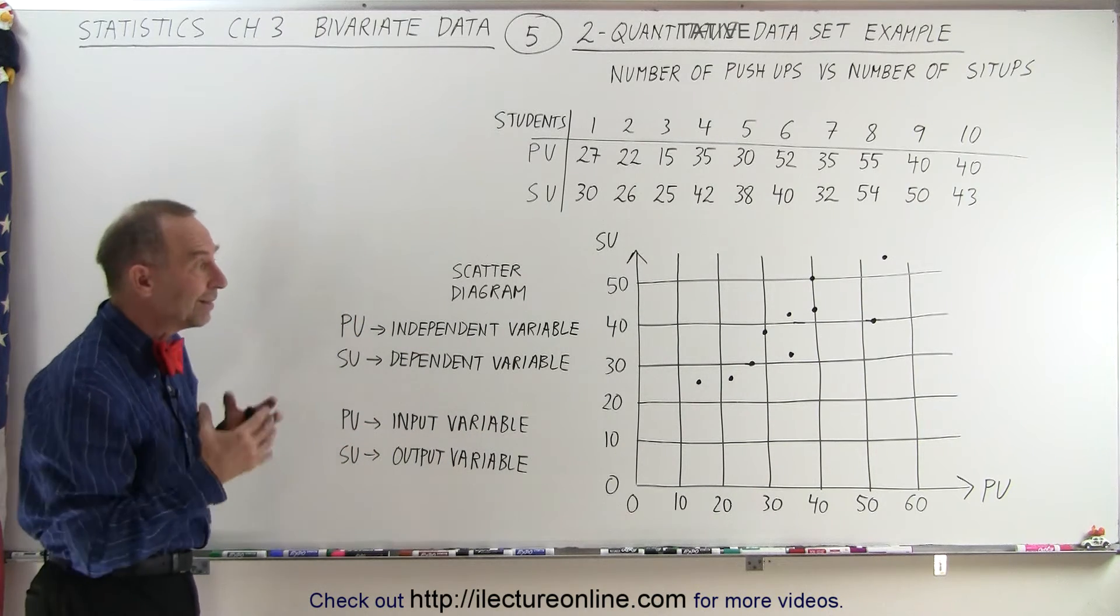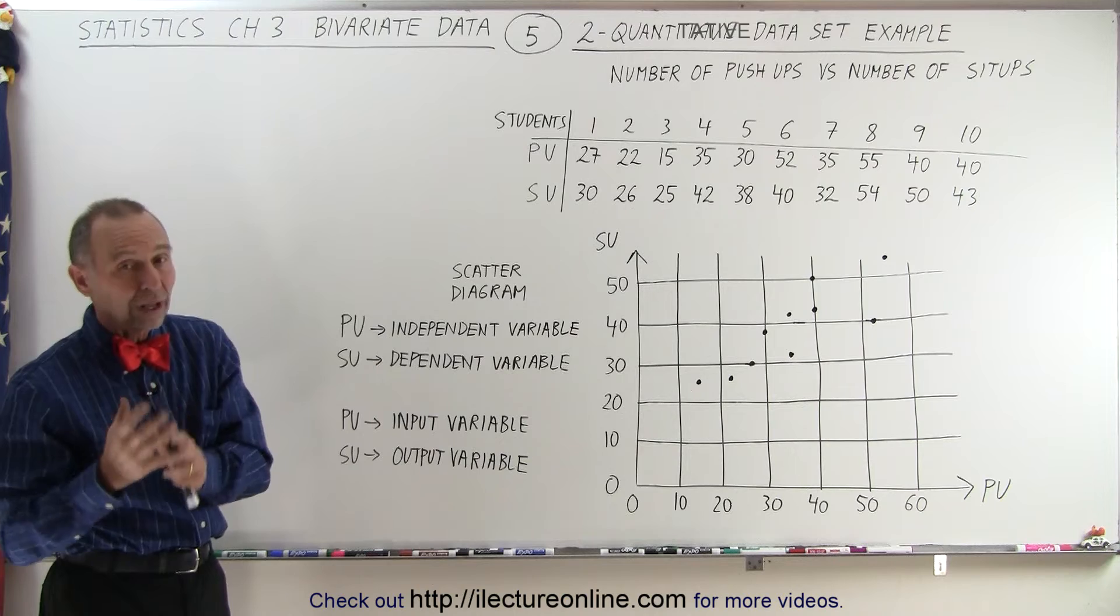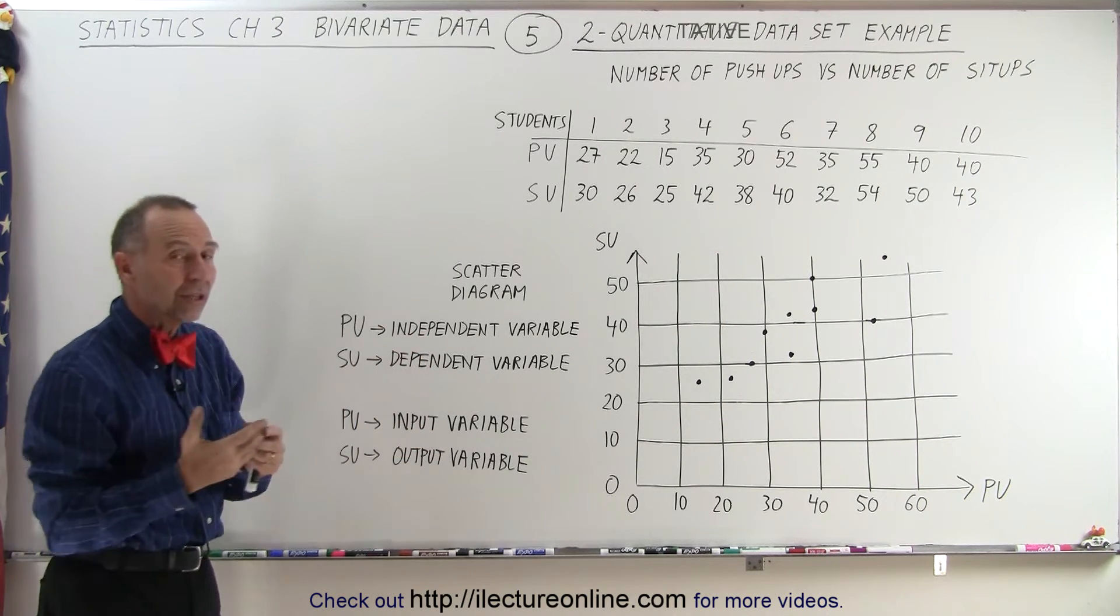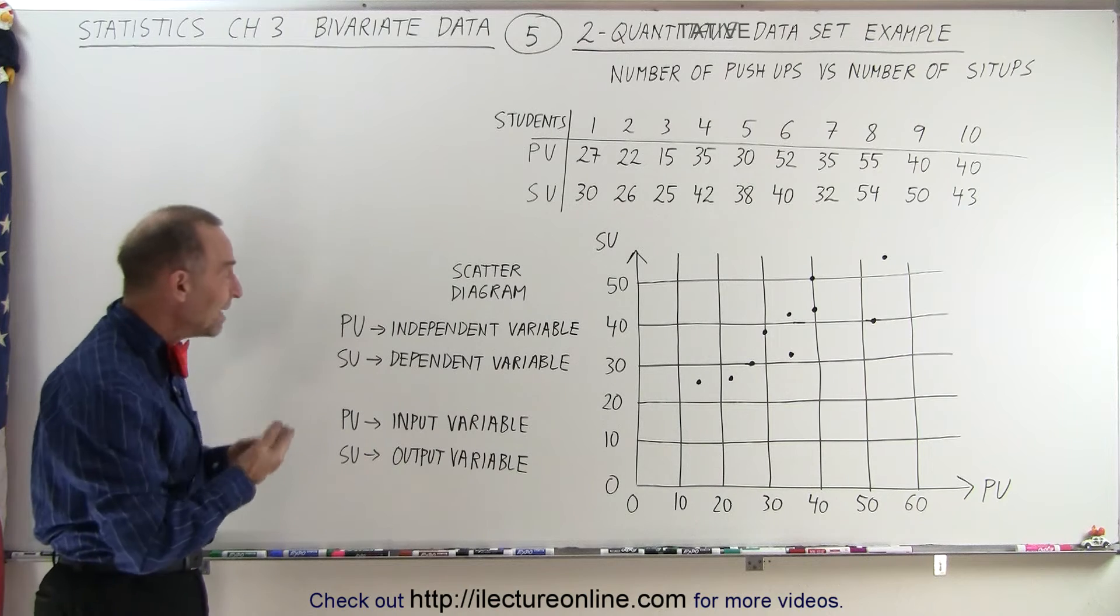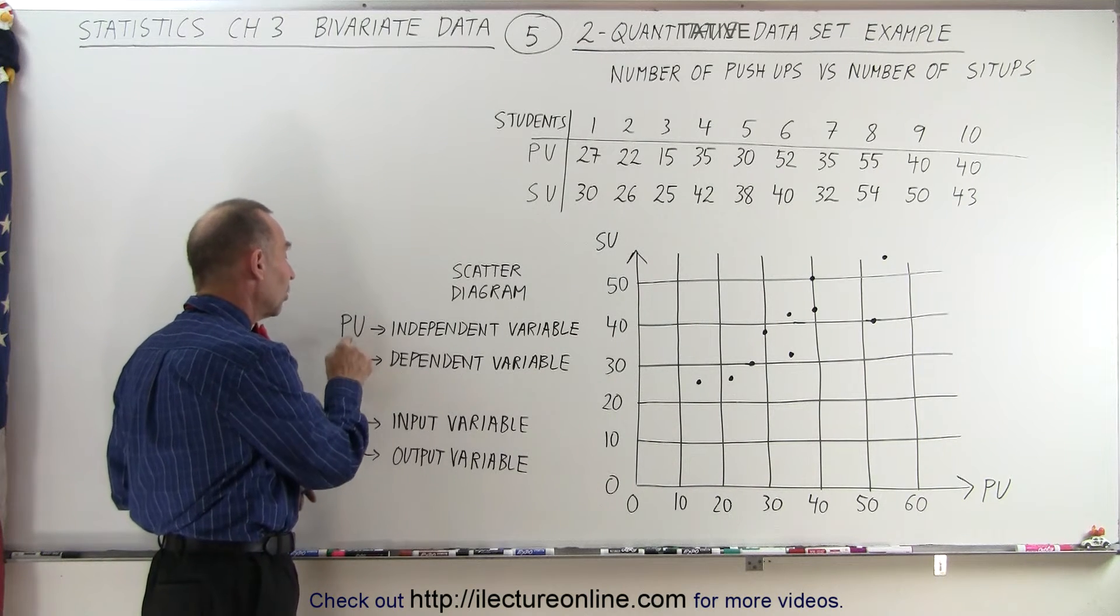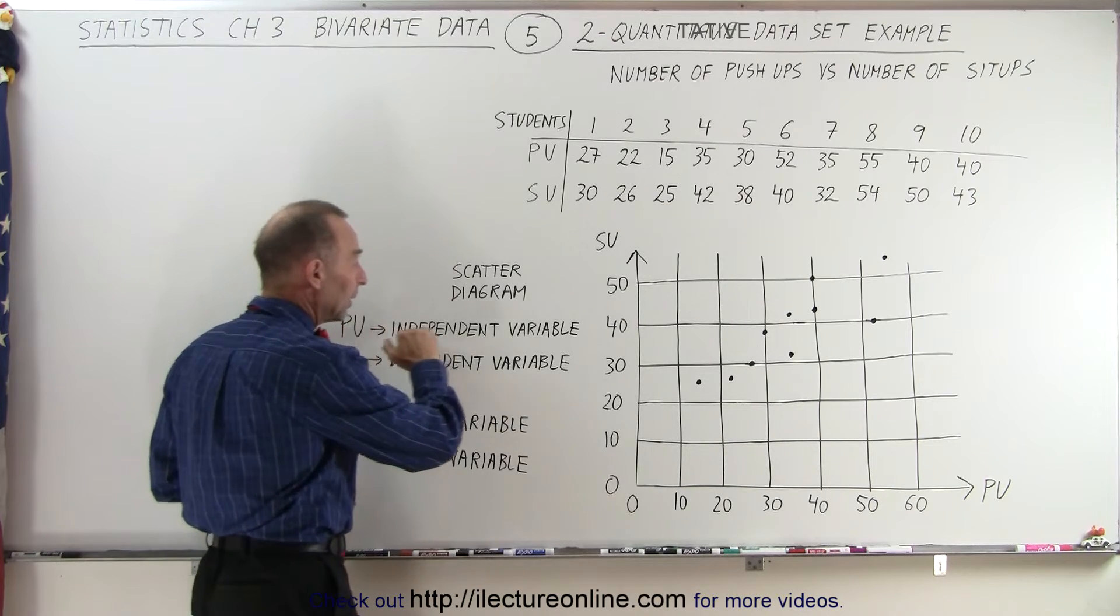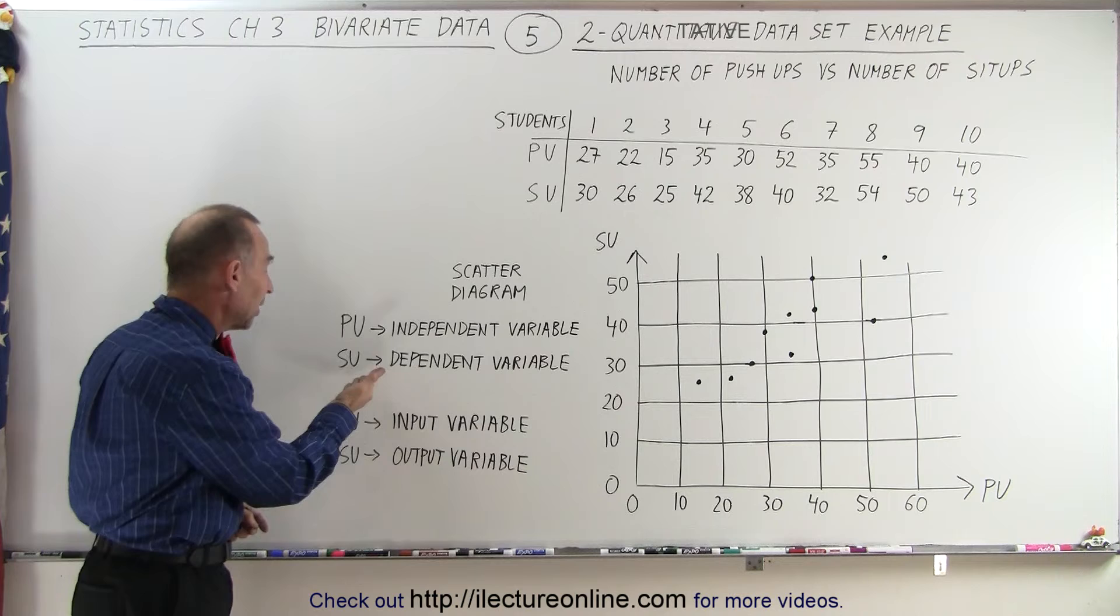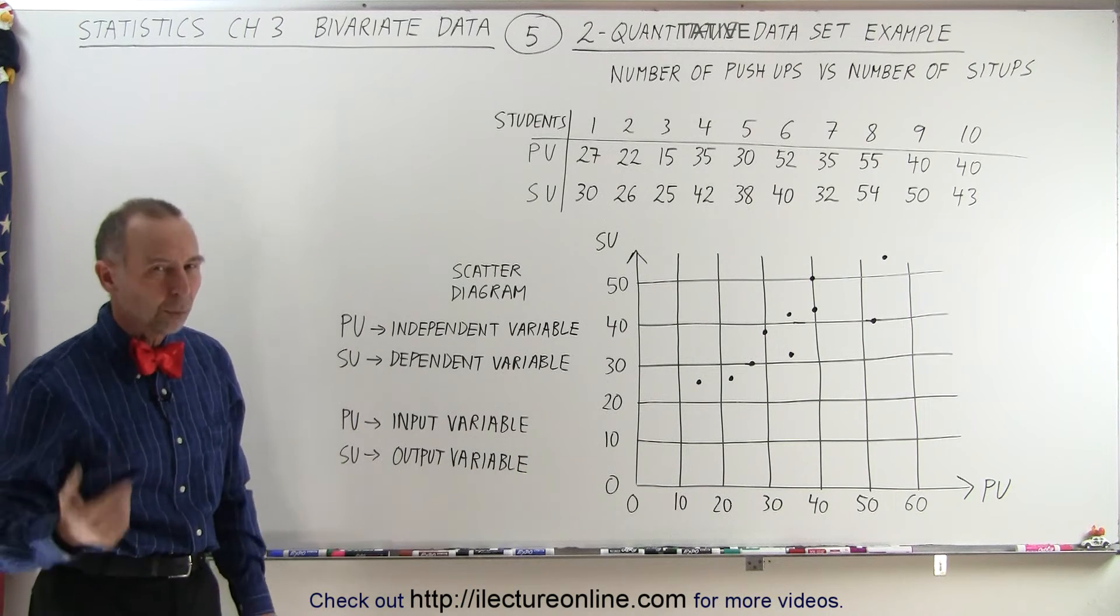We also need to realize that typically we have one of the data belonging to the independent variables and the other data is considered the dependent variable. In other words, the result of the sit-ups depends on the number of push-ups. So depending upon how many push-ups they can do, that's the independent variable. We measure that. We can then perhaps predict how many sit-ups they will be able to do.